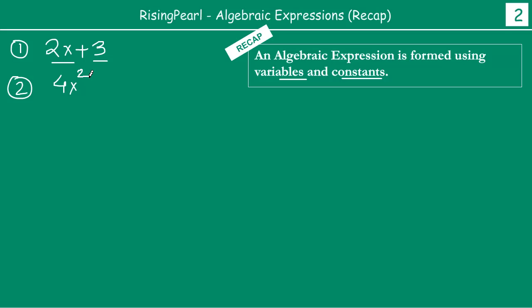Some examples: let's say 2x plus 3. This is an algebraic expression, our first example. Here you have a variable term which is 2x and a constant term which is 3. Let's write another example: 4x squared minus 2x plus 3. This is again another expression.